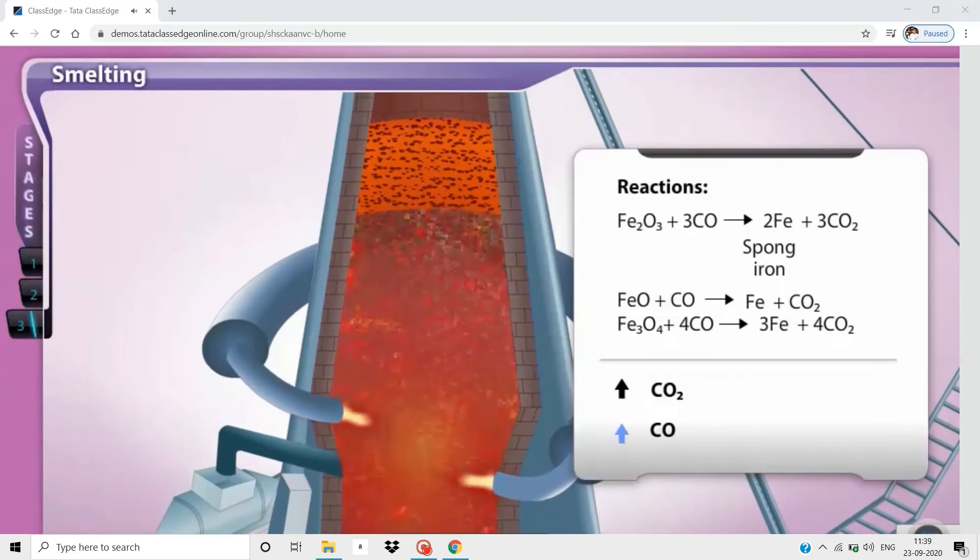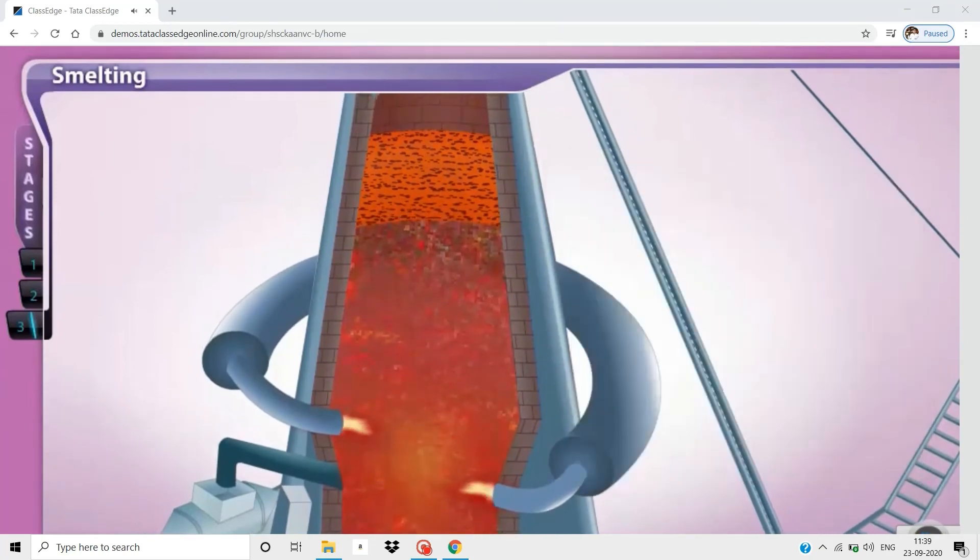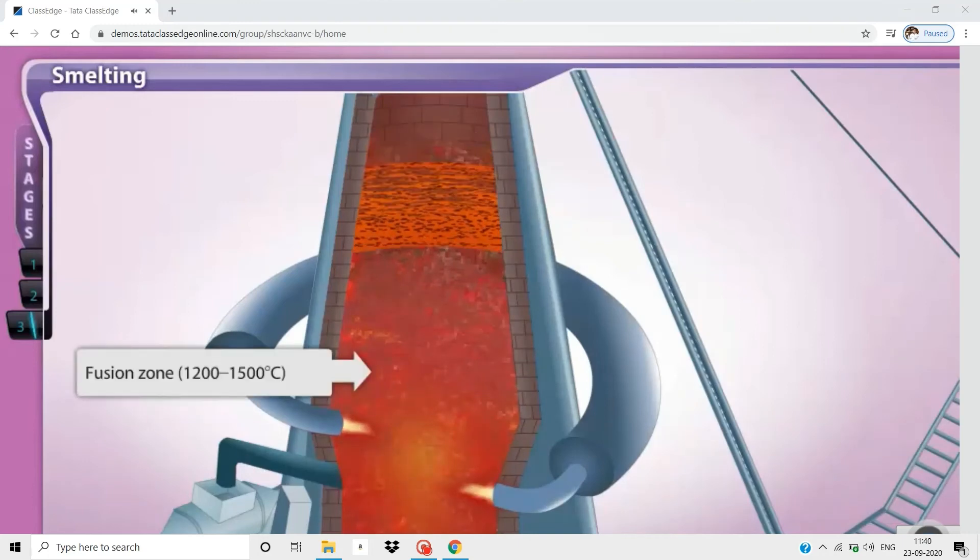The iron formed at this temperature is in its solid form and is called sponge iron. The sponge iron moves down and melts in the fusion zone and slowly sinks to the bottom. This molten iron has some dissolved impurities.